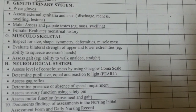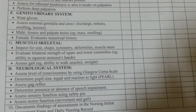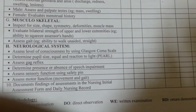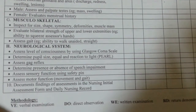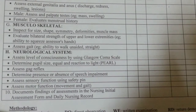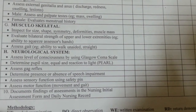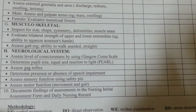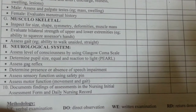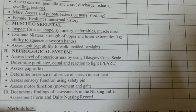For the musculoskeletal system, inspect for size, shape, symmetry, deformities, and muscle mass. Evaluate bilateral strength of upper and lower extremities — ability to squeeze and stretch the hands. Then assess gait and ability to walk unaided in a straight line. For the neurological assessment, assess level of consciousness using the Glasgow Coma Scale, determine pupil size — equal and reactive to light — assess gag reflex, determine presence or absence of speech impairment, assess sensory function using a safety pin, and assess motor function by noting movement and gait.